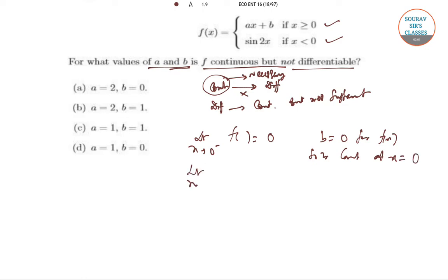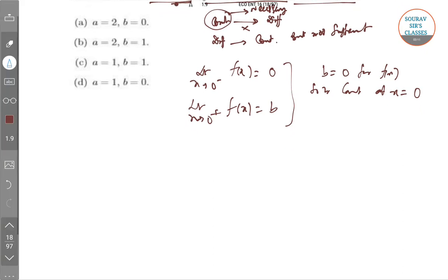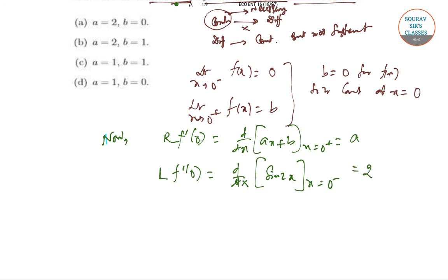And limit x tends to 0 plus, f(x) equals b, so the same applies for both. Now checking the right hand differentiability, f'(0) is d/dx of (ax + b) at x tends to 0 positive, which is a itself. The left hand limit f'(0) is d/dx of sin 2x at x equals 0 minus, and that equals 2.